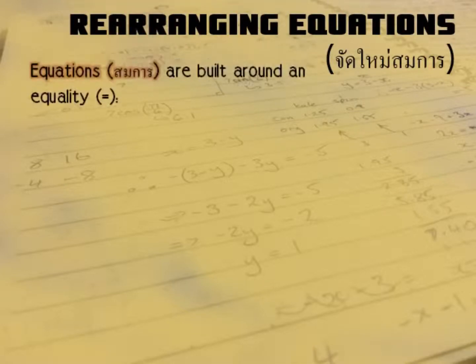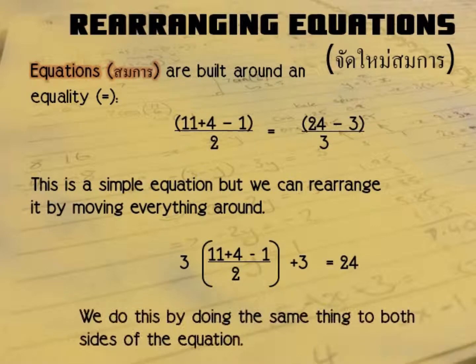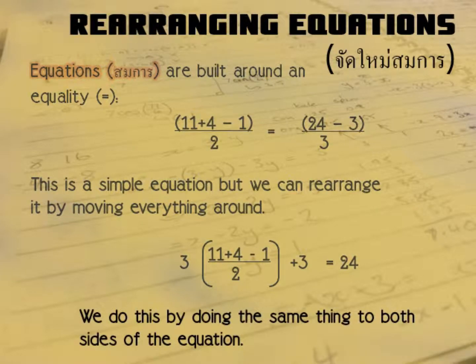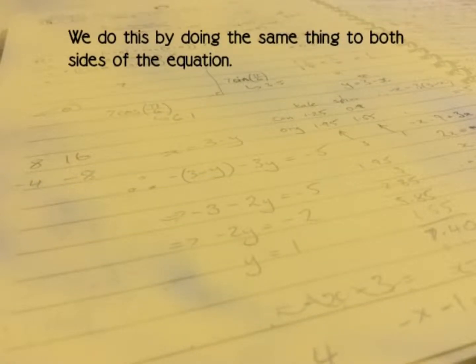Rearranging equations now. Okay, rearranging equations is something we do a lot in maths. All equations, as you know, are built around an equality. And here is a fairly simple equation that uses only the basic maths signs. But we can rearrange it by moving everything around. Here is the same equation, just rearranged. And we do this by doing the same thing to both sides of an equation.